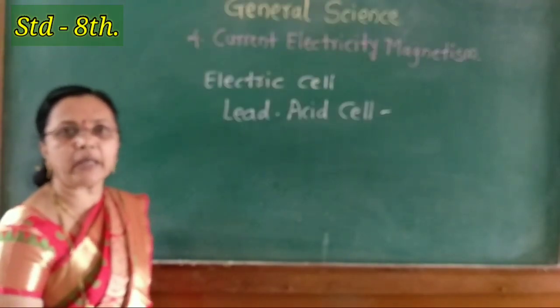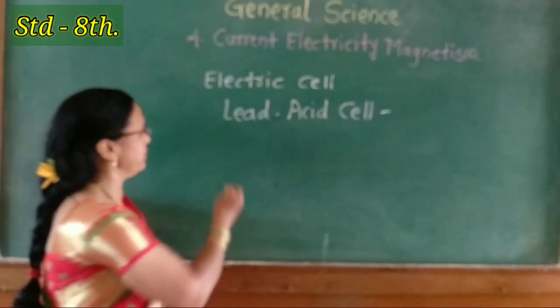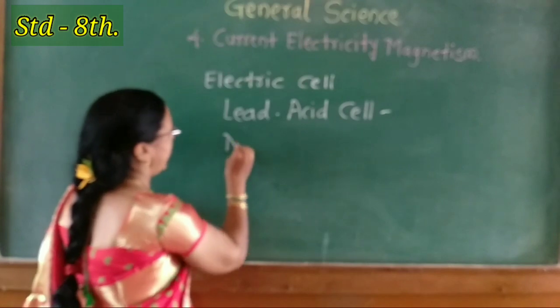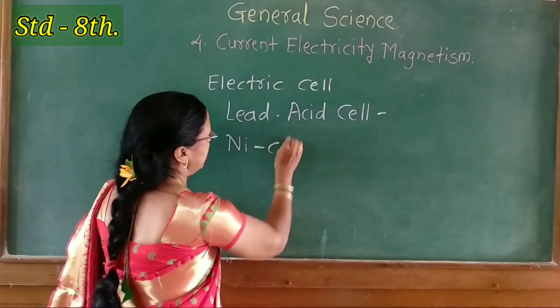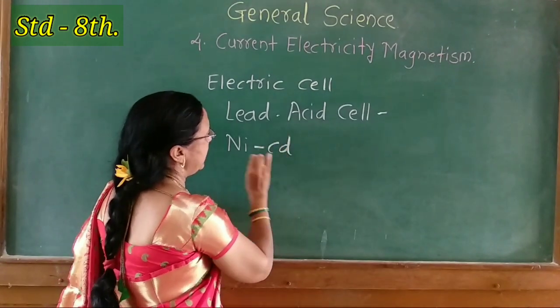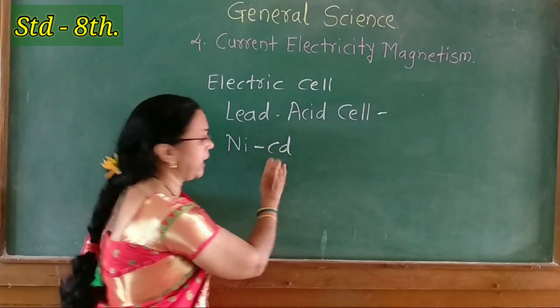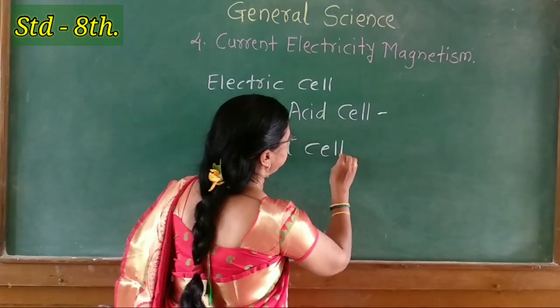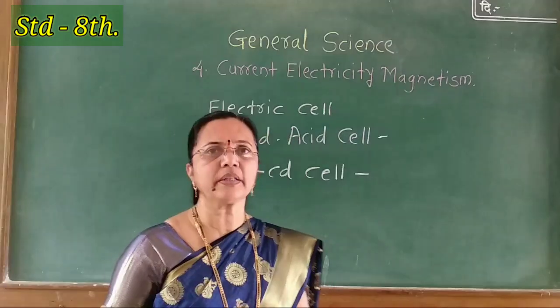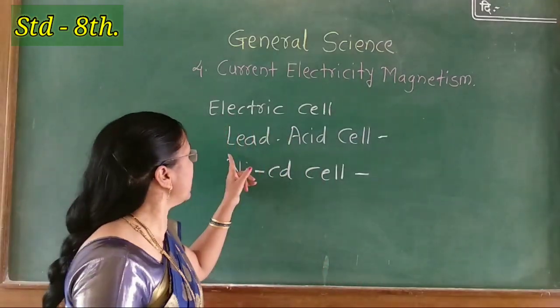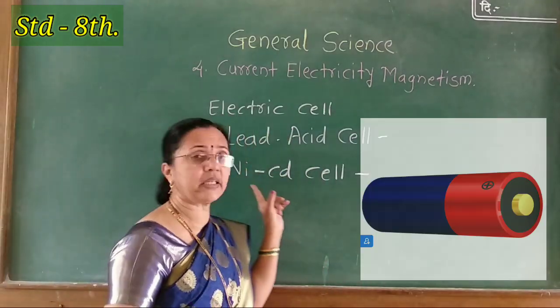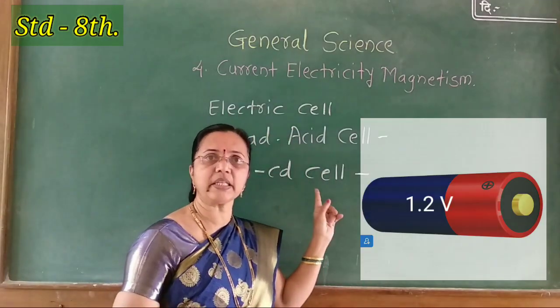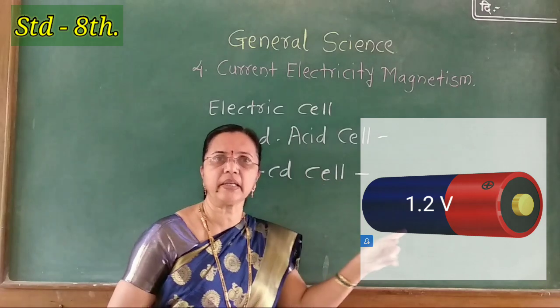The next electric cell is the nickel-cadmium cell. These cells are called Ni-cadmium cells, or Ni-Cd cells.